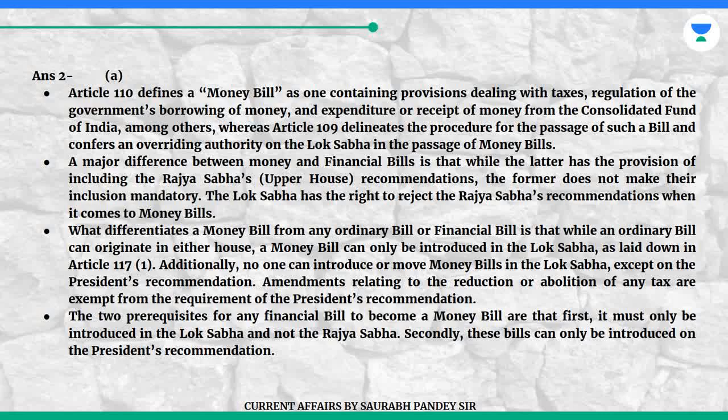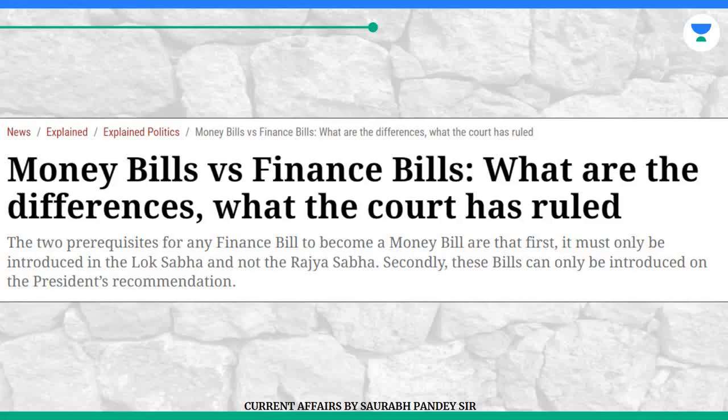What differentiates a money bill from any ordinary bill or financial bill is that while an ordinary bill can originate in either house, a money bill can only be introduced in the Lok Sabha as laid down in Article 117(1). Additionally, no one can introduce or move money bills in the Lok Sabha except on the President's recommendation. Amendments relating to the reduction or abolition of any tax are exempt from the requirement of the President's recommendation. The two prerequisites for any financial bill to become a money bill are: first, it must only be introduced in the Lok Sabha and not the Rajya Sabha; secondly, these bills can only be introduced on the President's recommendation.